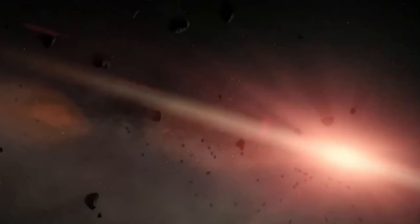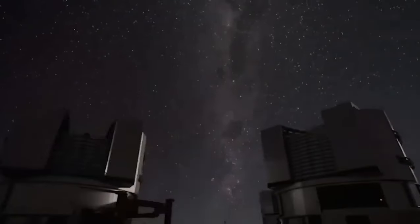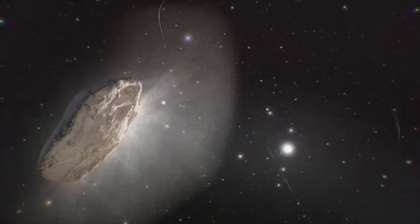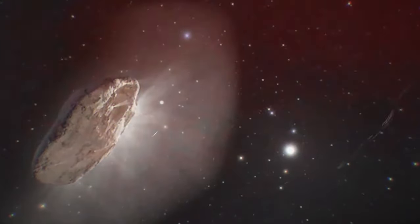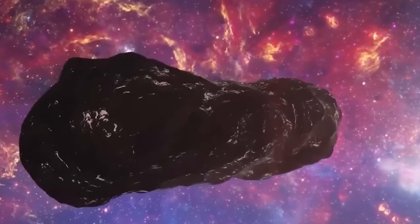The first astronomer to identify it was Rob Weryk, an astronomer from the University of Hawaii. At first, he thought it was a regular comet or asteroid. However, when he took a closer look, he found something amazing. This object is an intergalactic traveler in our celestial neighborhood.